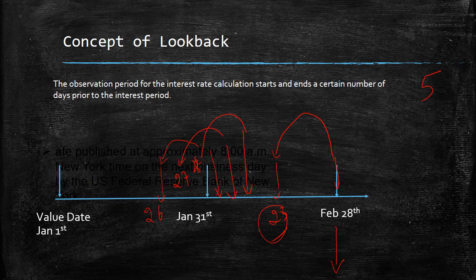The lookback days can obviously be mutually agreed upon. Five is probably a very good number, but it could be three or even two. So this concept of lookback is probably the most favored approach for RFR, and this is about SOFR.